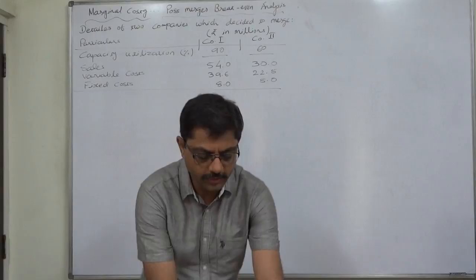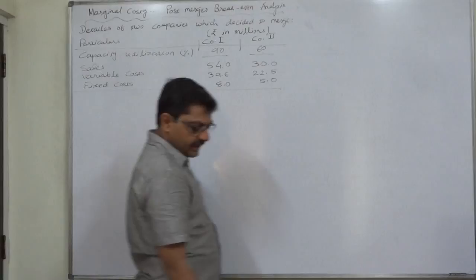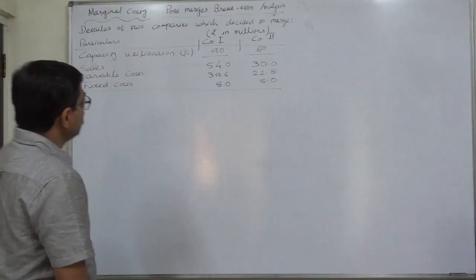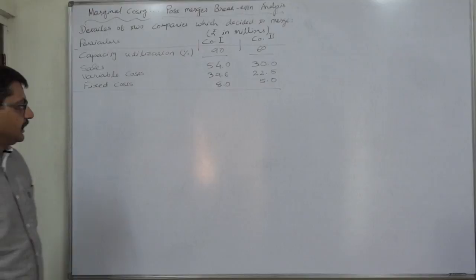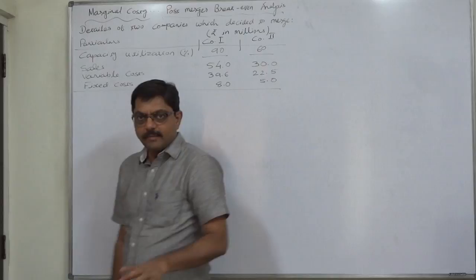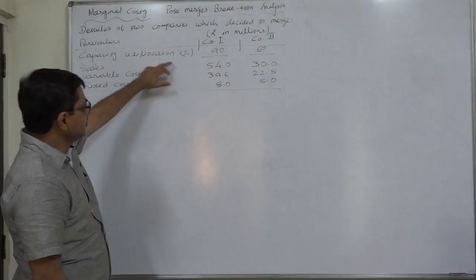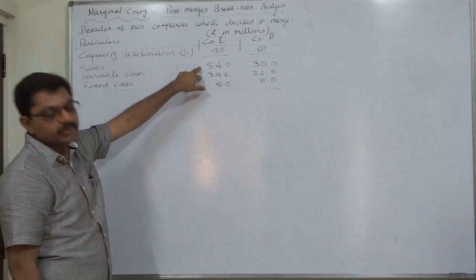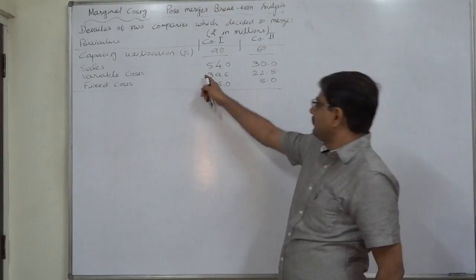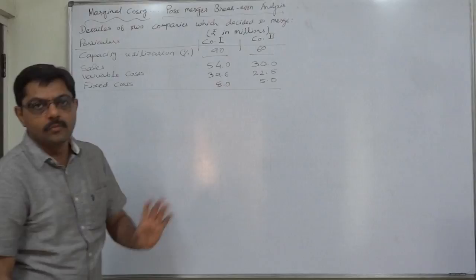Hello and welcome friends. One more new case of marginal costing, and this time we are going to discuss breakeven analysis, CVP analysis, profit planning, etc. after merger of two companies — post-merger breakeven analysis. There are fixed steps to solve this type of problem. First, read the question carefully and find out what is the capacity utilization at present, because sales and variable cost are both directly dependent on the capacity utilization percentage. Then calculate sales and variable costs at 100% capacity utilization for all the companies under consideration for merger.